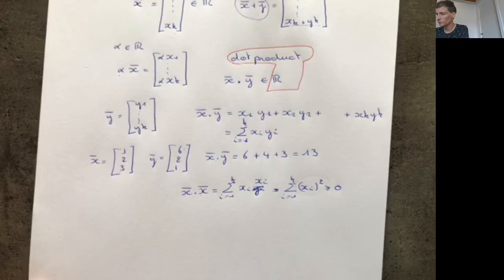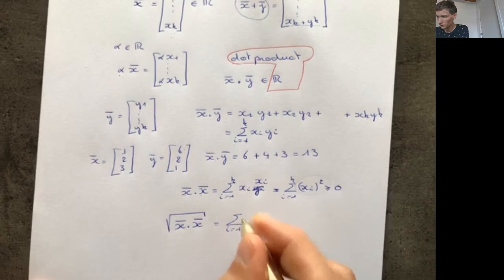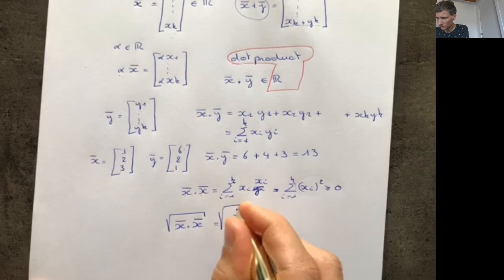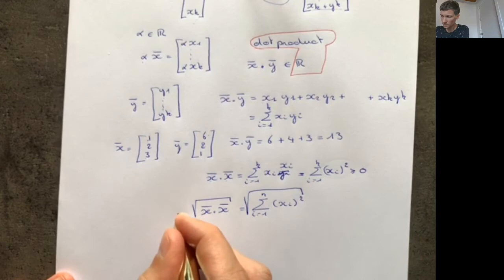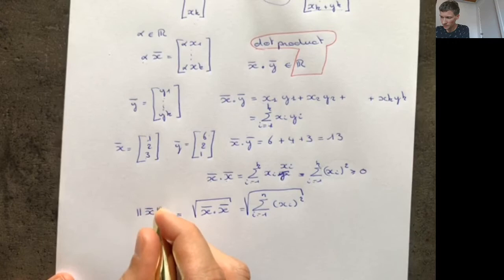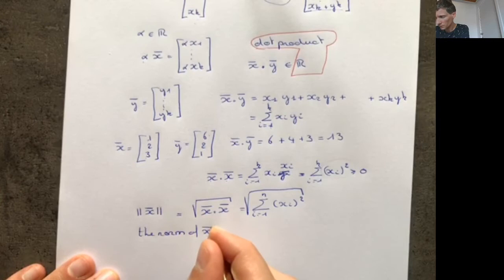Since x·x is always non-negative, you can take its square root. The square root of the sum from i = 1 to k of xᵢ² — that is, taking the square root of the sum of all squared components — is called the norm of x, written as ||x||. You can take the norm of any vector.